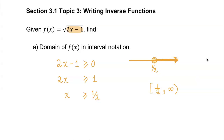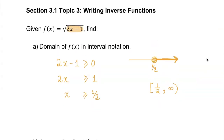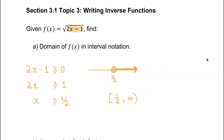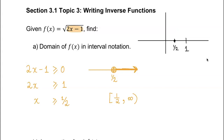Now let's think about the range of this function. They didn't ask for it here, but it will be very useful when we find the domain of the inverse function. This is a square root function with a domain starting at one-half. If you plug in one-half, you get a y-value of 0 — that's the starting point. We can use a graphing calculator to confirm this.